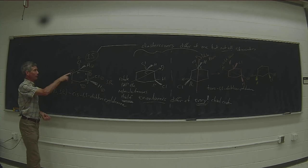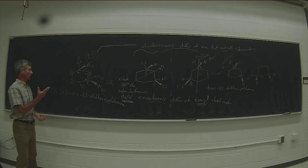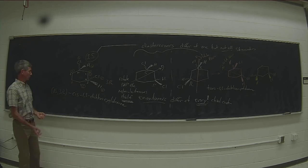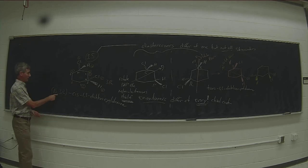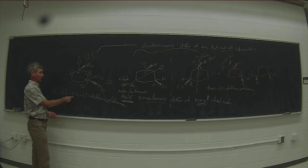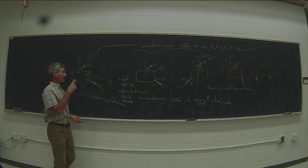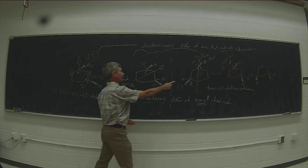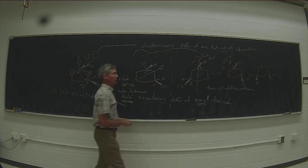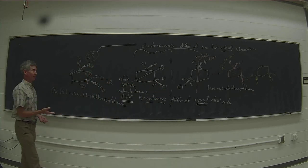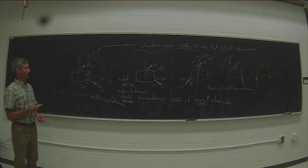So there are three possible stereoisomers of 1,3-dichlorocyclohexane: 1S,3R is the cis isomer (the meso compound), and 1S,3S and 1R,3R are both trans-1,3-dichlorocyclohexane and form an enantiomeric pair.